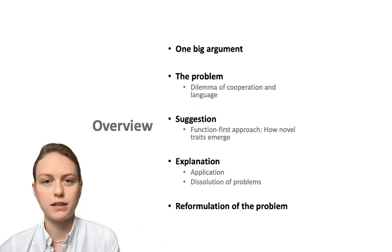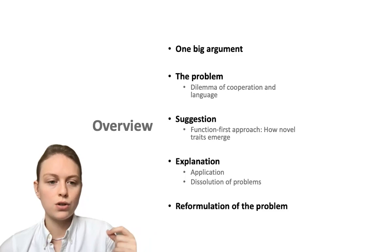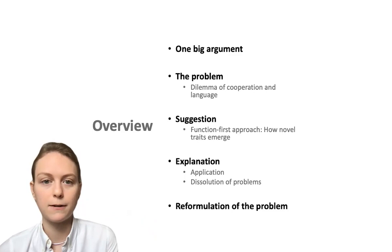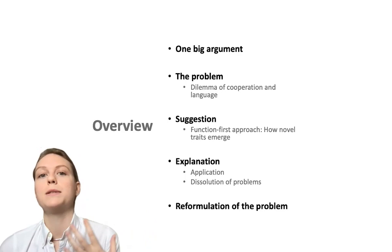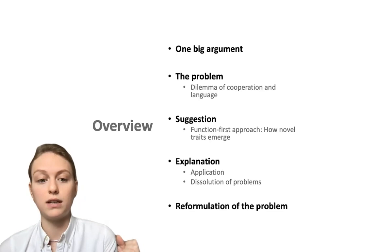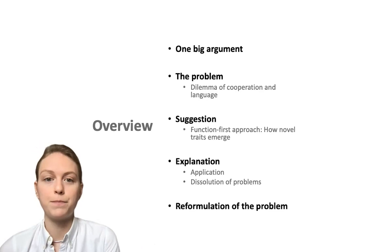Before I start with the content, I'll briefly explain how this presentation will work. It is structured as one big argument, so do not expect tiny arguments that come to a conclusion at the end. You have to listen to the whole thing to understand the conclusion. At the beginning I'll explain the problem — mainly the dilemma of cooperation in language. Then I'll explain our suggestion: how the function-first approach can help us dissolve this problem, and how novel traits emerge. Then I'll explain how the application works, how it dissolves both problems, and finally how it helps us reformulate the problem of language evolution.